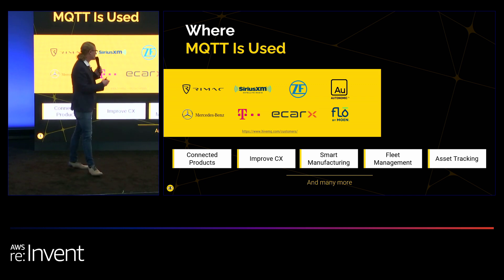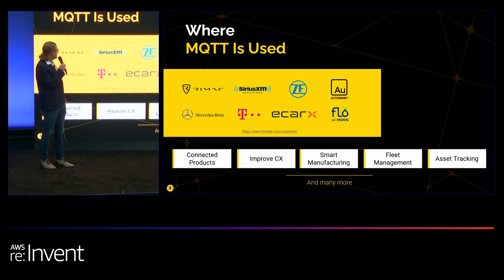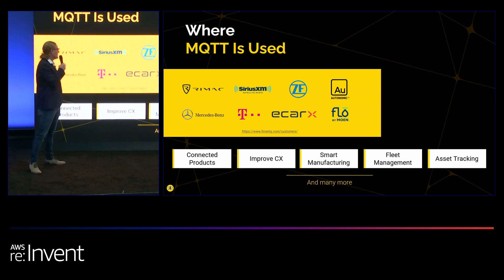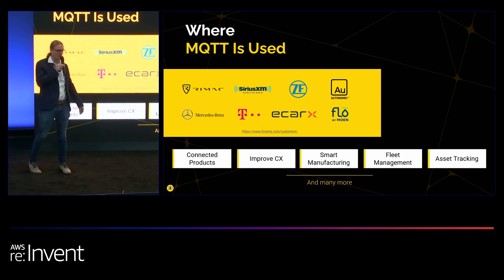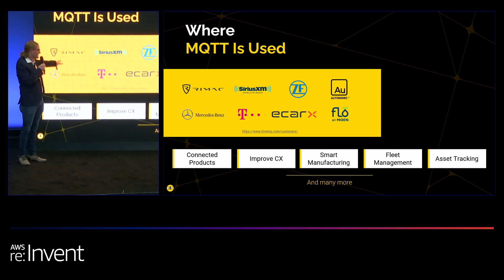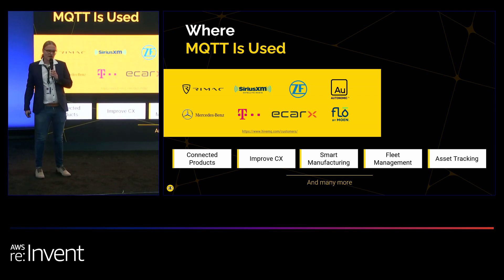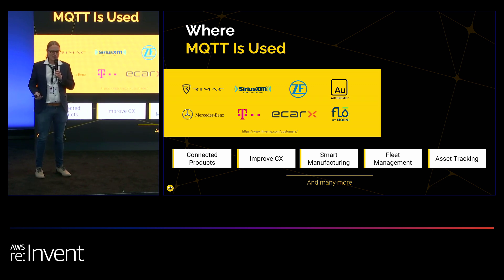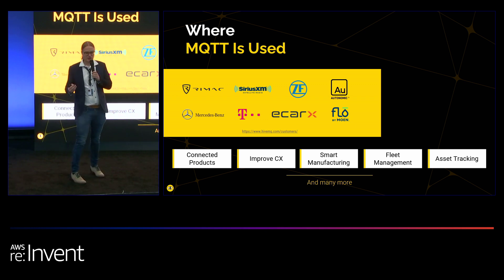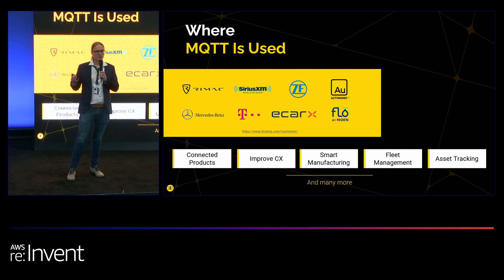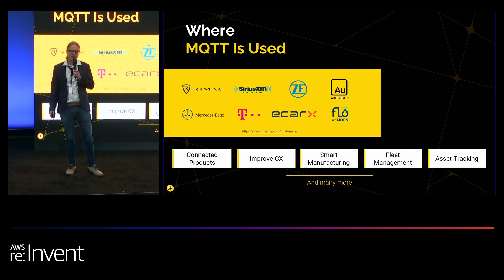Here's just a small section of our customers that use MQTT — everything from big household names in the US, from big connected car platforms like Autonomic, which is connecting all of the cars worldwide for Ford, to car companies like Mercedes-Benz, telecommunication companies, and so on. MQTT is used especially in connected products, smart manufacturing, fleet management, logistics, asset tracking, industrial IoT. In this session, we will talk about some of the architecture patterns and how you can build scalable systems based on MQTT on AWS.